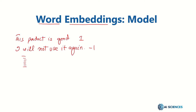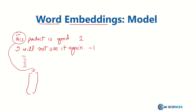The word-level embedding will convert the first word to a feature vector — not necessarily a one-hot encoding, maybe a word-level embedding, or maybe a BERT embedding, or maybe a GloVe embedding.